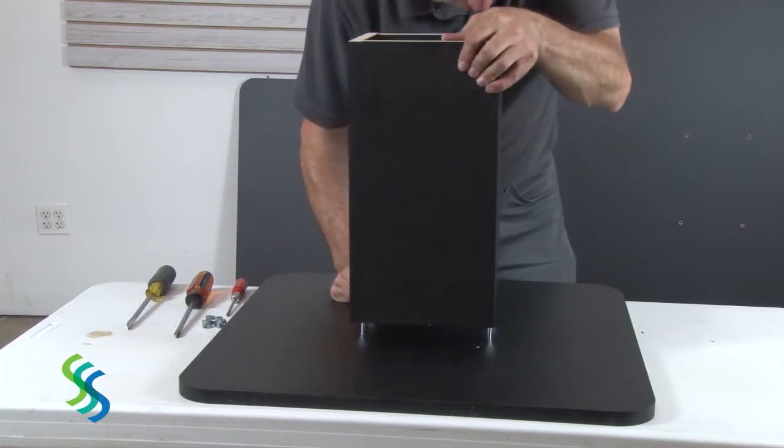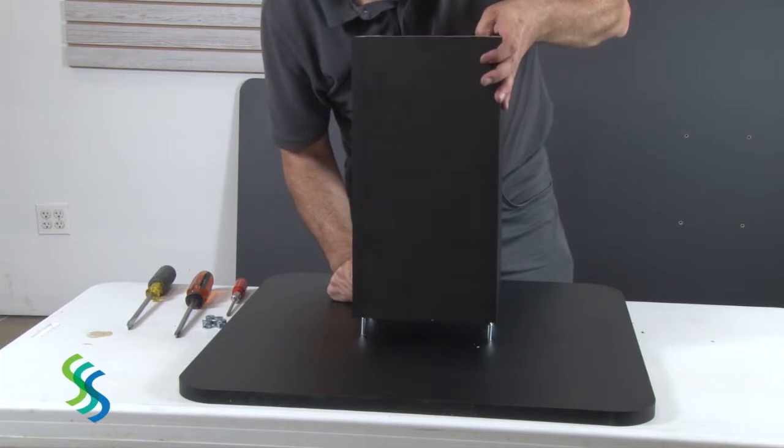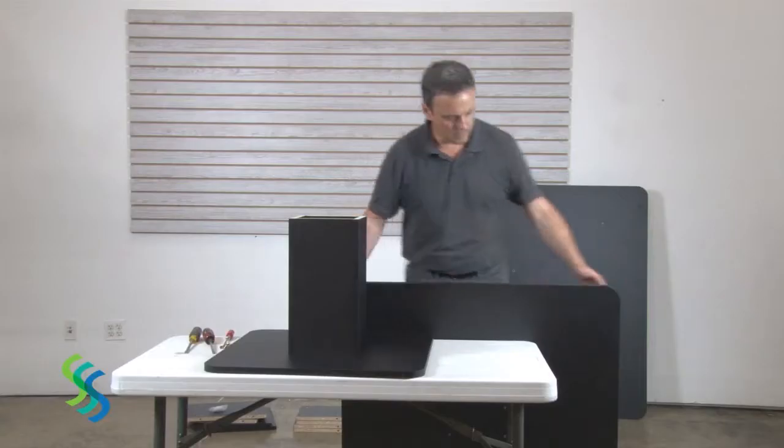Lower the assembled support stand for the top tier onto the cam lock screws, then use cam locks to secure the stand to the top tier.